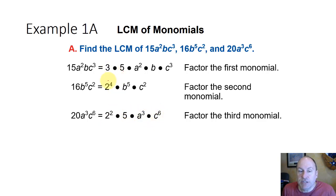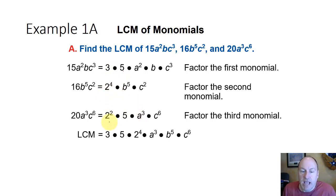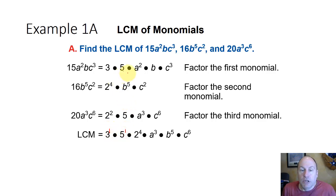So we're going to find each of these factors and find the largest number of each. If we look at the threes, there's only one three in all of these — 3 to the first. Then if we look at the fives, the five appears once in two of the factors, so we have 5 to the first. The largest number of twos: there are two here but four here, so we go with 2 to the fourth.